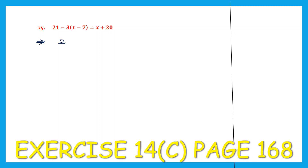21. Now we multiply minus 3 into x, that is minus 3x. Then we do minus 3 into minus 7. Minus into minus is plus. 3 7s are 21. On the right hand side we have x plus 20. Let's see if it can work with the whole numbers here. We have plus 21 and plus 21.